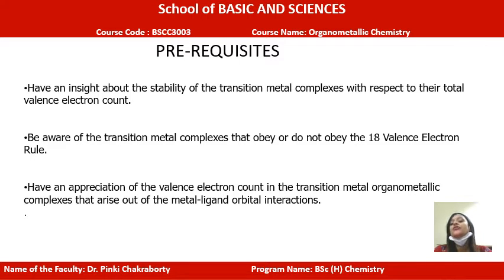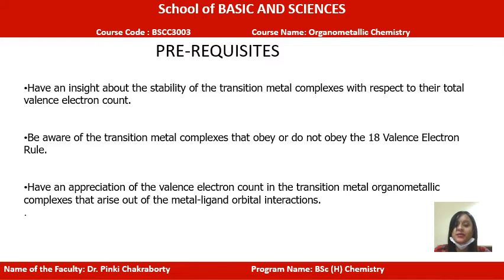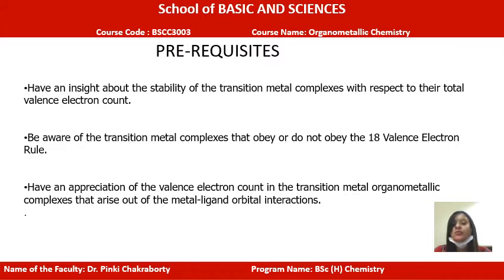Second, we should be aware of how transition metal complexes obey the 18 electron rule. At the same time, we should know what complexes do not obey the 18 electron rule but still they are stable. Third, we should appreciate that this 18 electron rule is very helpful to determine the thermodynamic stability of any organometallic compound, which helps to understand the type of interaction and their applicability.